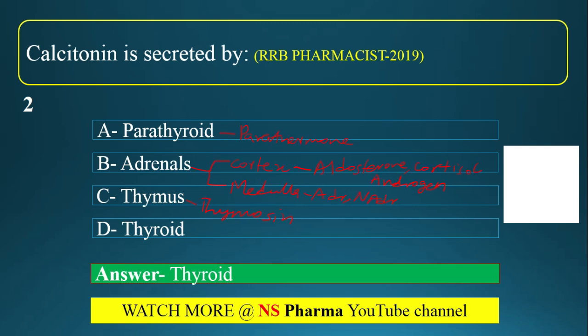Calcitonin decreases calcium levels in the blood, while parathormone increases calcium levels in the blood. So: thyroid gland produces calcitonin, parathyroid gland produces parathormone. Calcitonin decreases calcium levels while parathormone increases calcium levels.